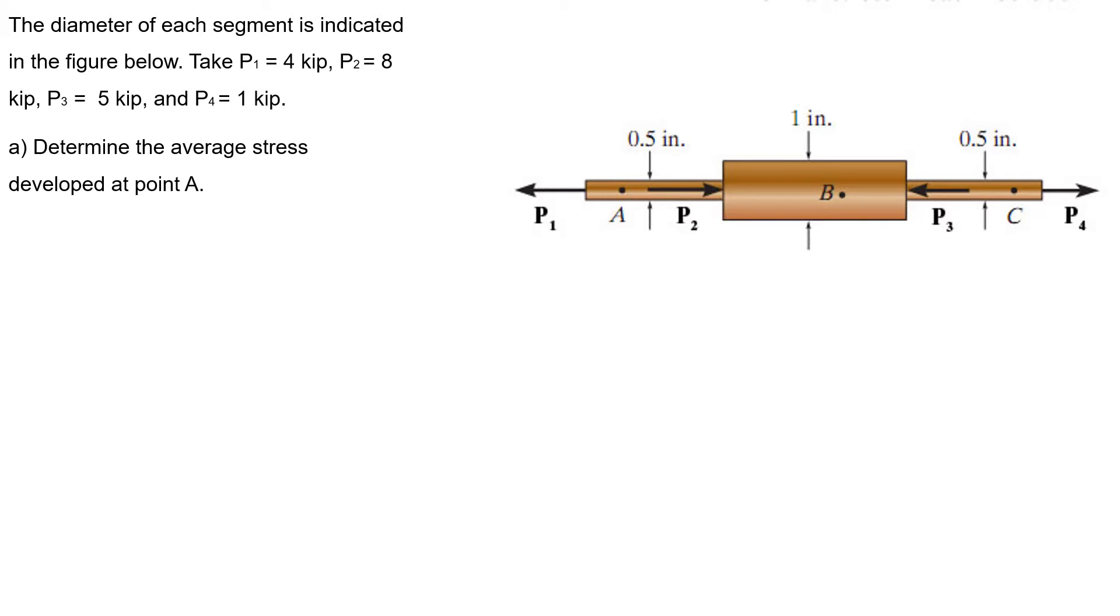First, we're going to do a section cut at point A. We're going to have N1 here and P1 here. I'll start doing the sum of forces equals zero. So I have N1 minus P1 equals zero. So we have that N1 equals 4 kip.